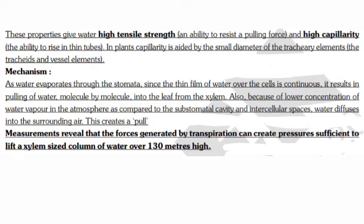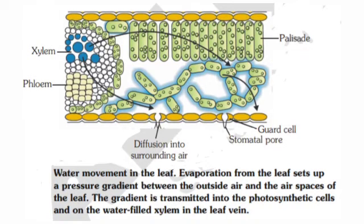Measurements reveal that the forces generated by transpiration can create pressure sufficient to lift a xylem-sized column of water over 130 meters high. Let's check the diagrammatic representation of water movement in the leaf. Evaporation from the leaf sets up a pressure gradient between the outside air and the intercellular spaces of the leaf. The gradient is transmitted into the photosynthetic cells and onto the water-filled xylem in the leaf vein.